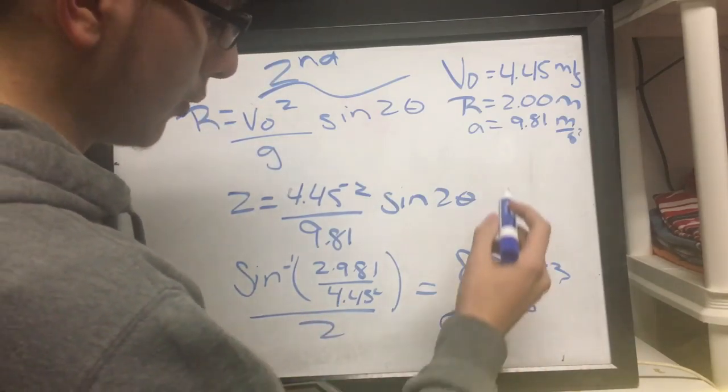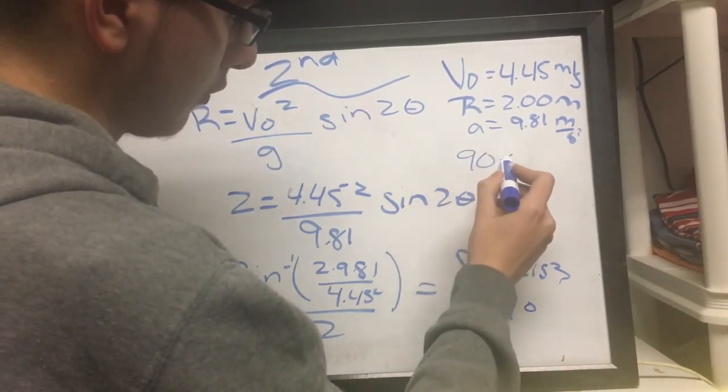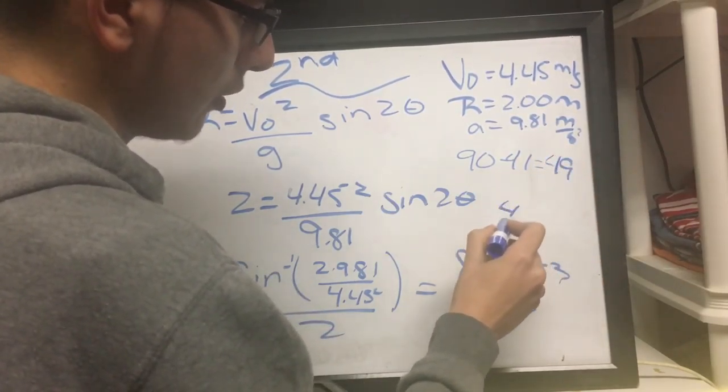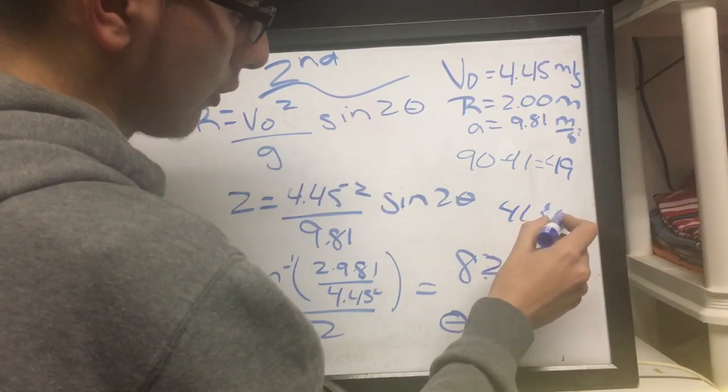Or also its complementary angle, which would be 90 minus 41, which equals 49 degrees. So you can launch it at 41 or at 49 degrees.